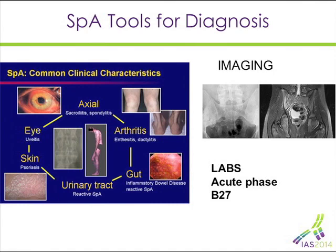This is then coupled with some form of imaging, and we are now in the era of MR. We also have adjuncts to help us in this process: laboratory markers, genetic and other markers, including acute phase reactants. We'll talk about how we use them in a minute.